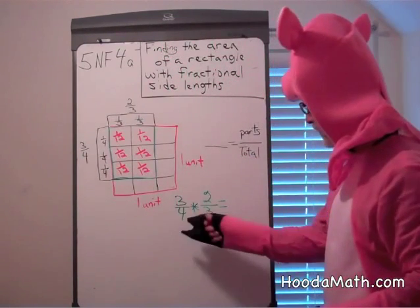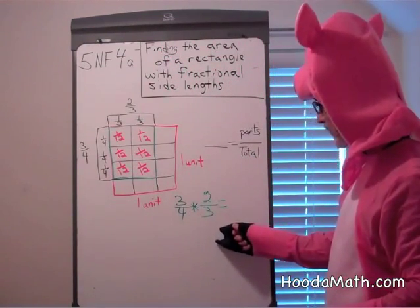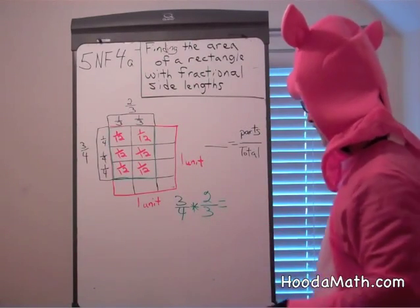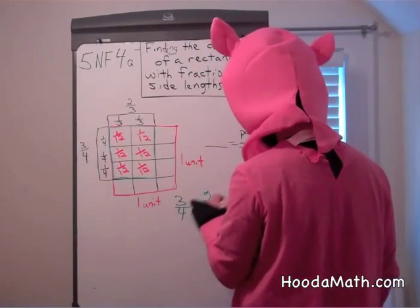The area of a three-fourths by two-thirds rectangle is one, two, three, four, five, six twelfths.